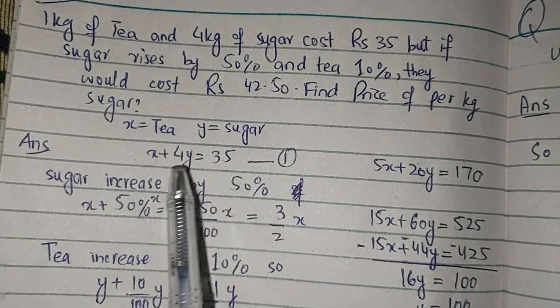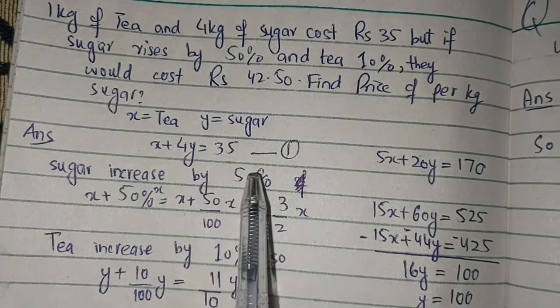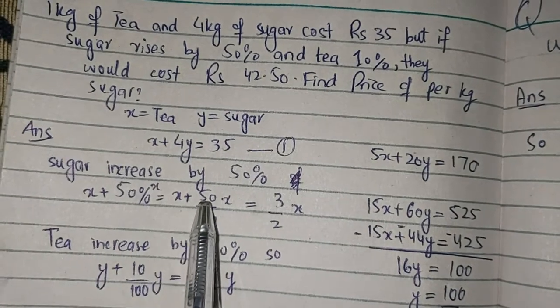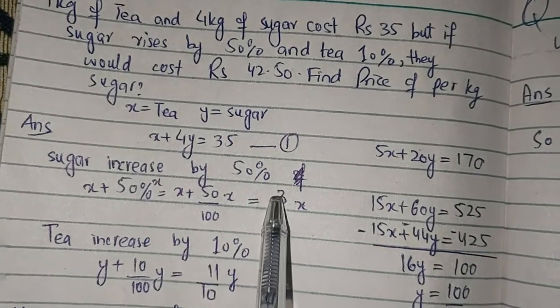First equation: x plus 4y equals 35. Sugar increases by 50%, so x plus 50% of x equals x plus 50/100 x, which equals 3/2 x.